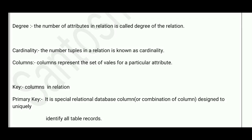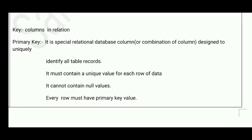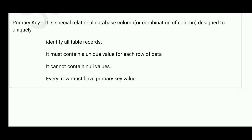Columns represent a set of values for a particular attribute. Primary key is a special relational database column, or combination of columns, designed to uniquely identify all table records. It must contain a unique value for each row and cannot contain null values — every row must have a primary key. In the student table, roll number is the primary key, which is not repeated. For example, on Facebook, your user ID is a primary key — it is assigned only to you and not to anyone else worldwide.